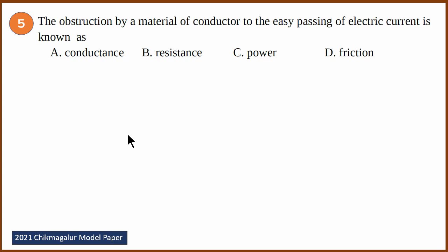Fifth question: the obstruction by a material of a conductor to the easy passing of electric current is known as — resistance. Conductance is the inverse of resistance. Power is a different concept. Friction is only applicable in mechanics — for electricity, the equivalent is resistance. The answer is resistance.